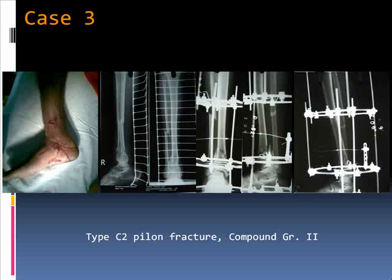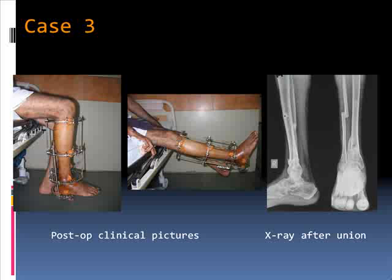This was a case of a grade 2 compound pilon fracture treated with the Ilizarov method. At the first step we didn't get good alignment, so we had to perform a secondary readjustment of the fixator. The patient subsequently did well in rehabilitation and achieved final union.